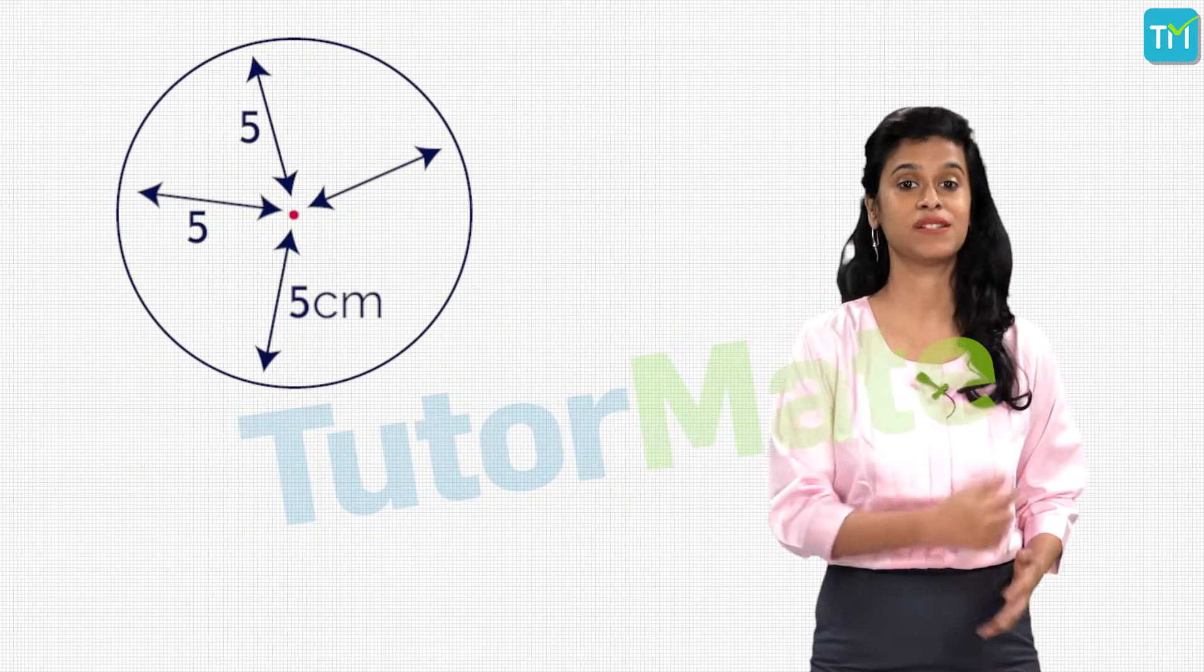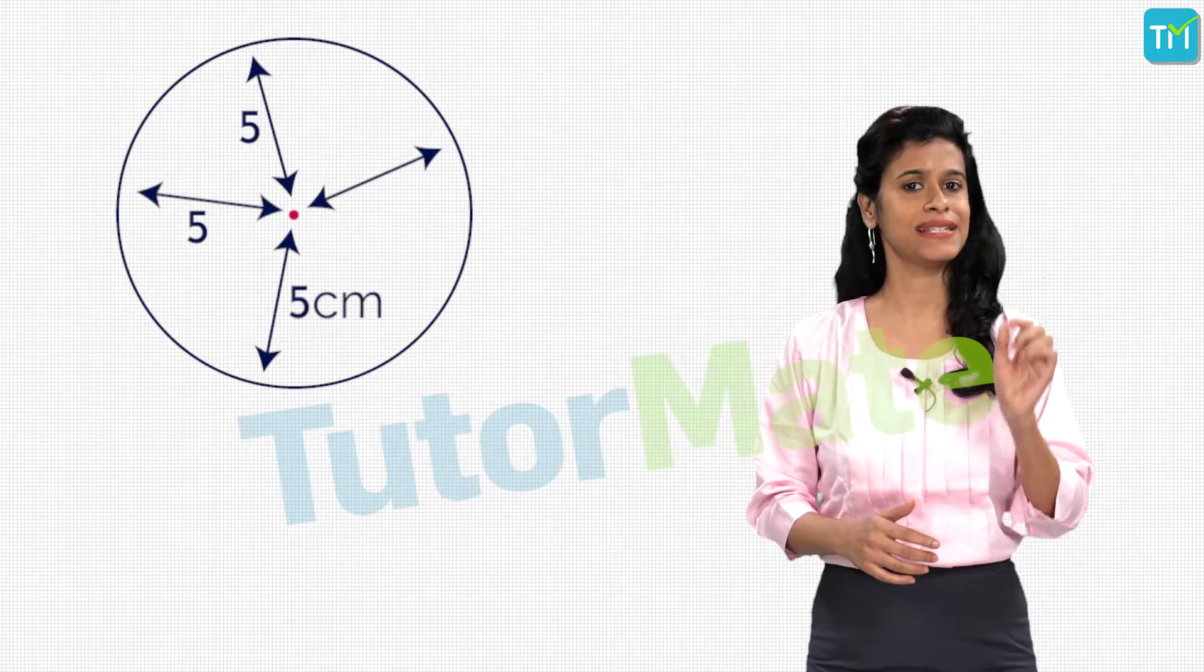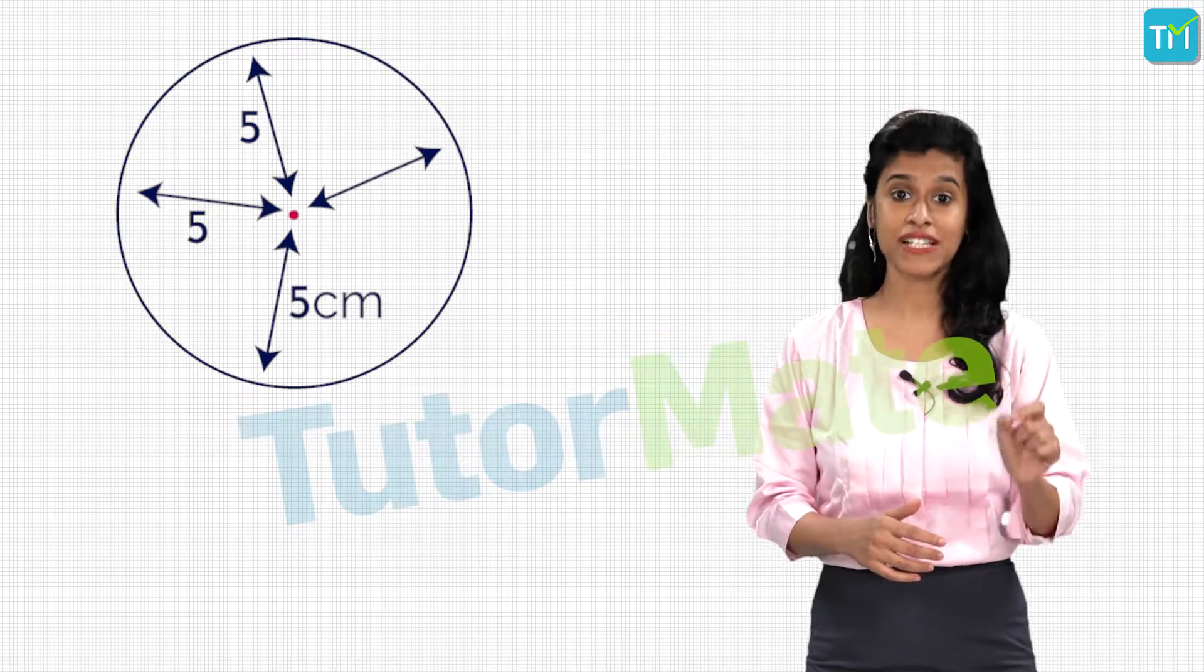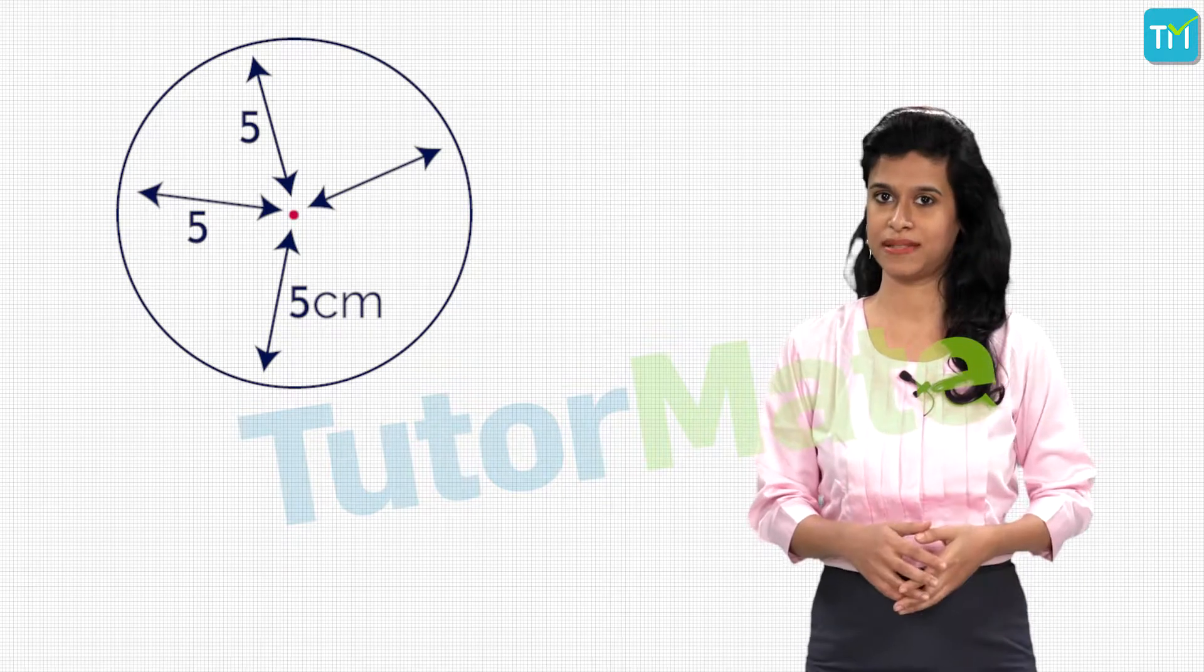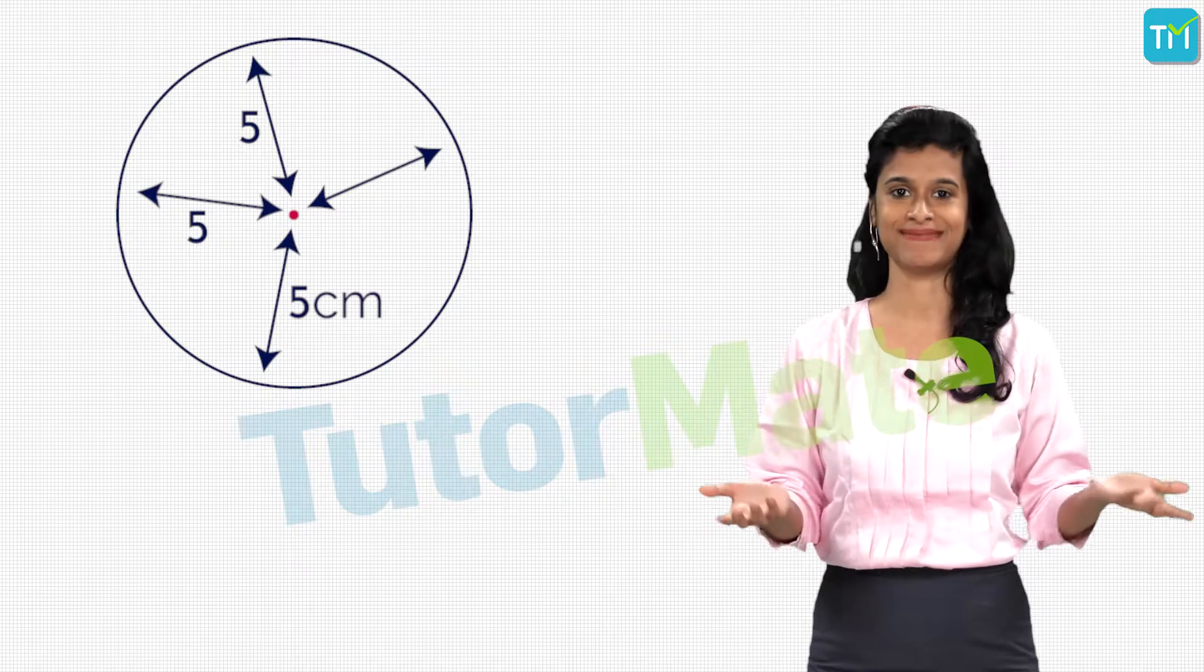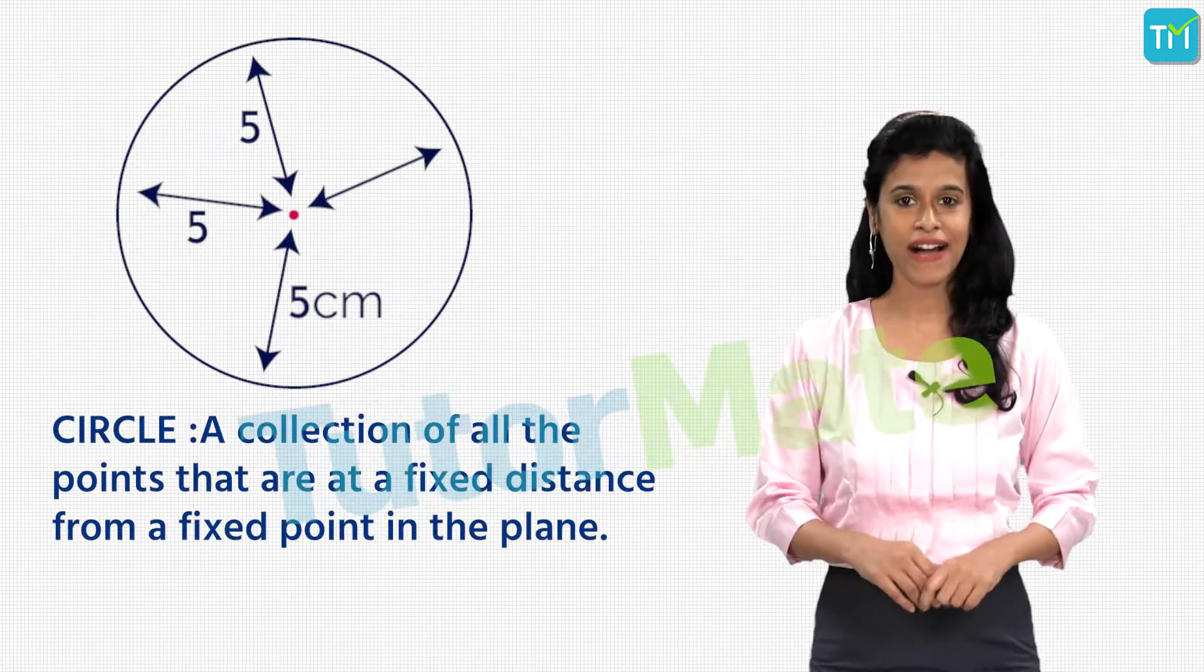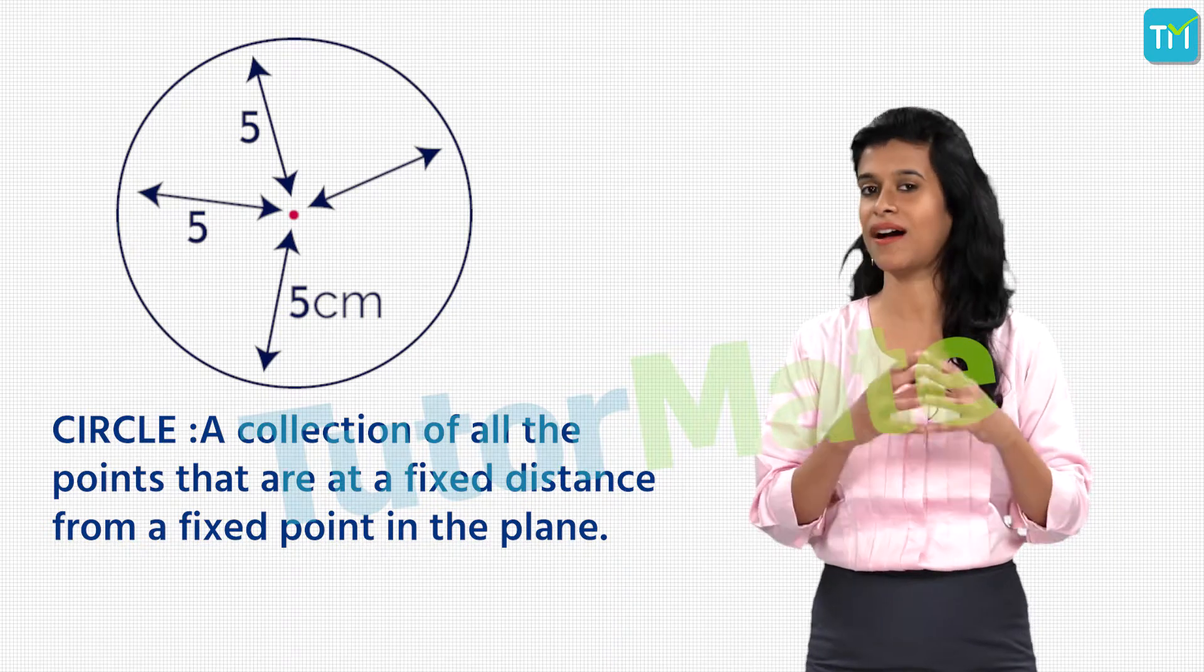If you notice, every point on the circle is at a fixed distance from the fixed point where we keep the pointed end of our compass. And this observation gives us the definition of the circle. That is, we define circle as a collection of all the points that are at a fixed distance from a fixed point in the plane.